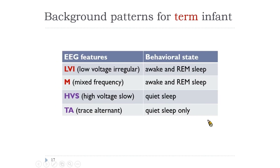At term, the background activity during wakefulness and active sleep is similar, whereas during quiet sleep they show high-voltage slow and tracé alternant patterns.